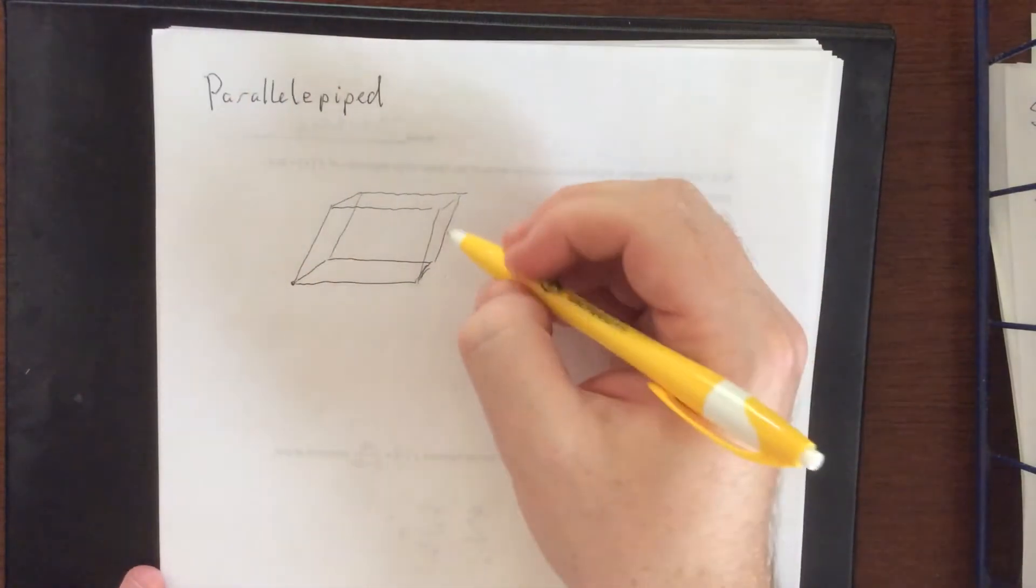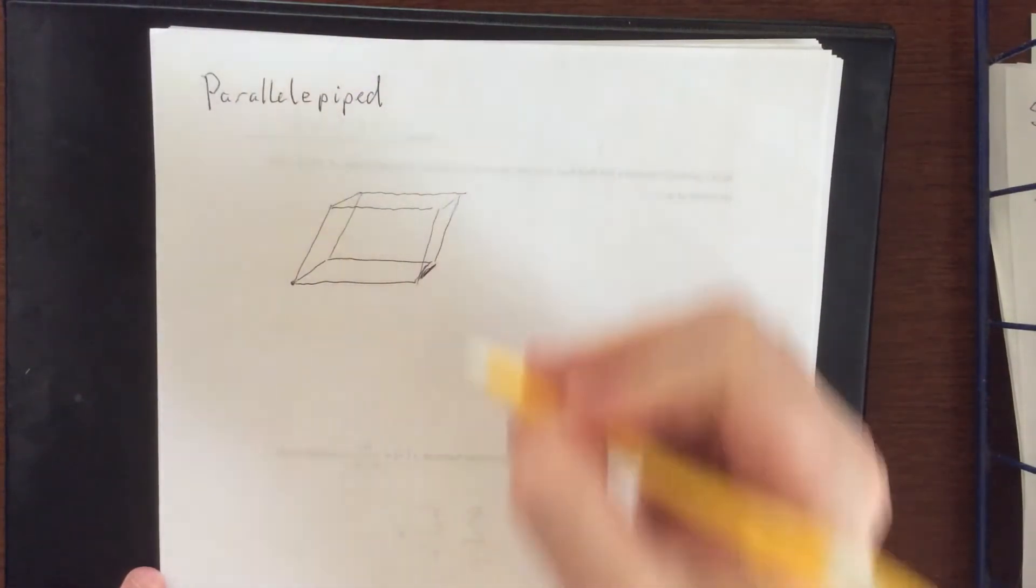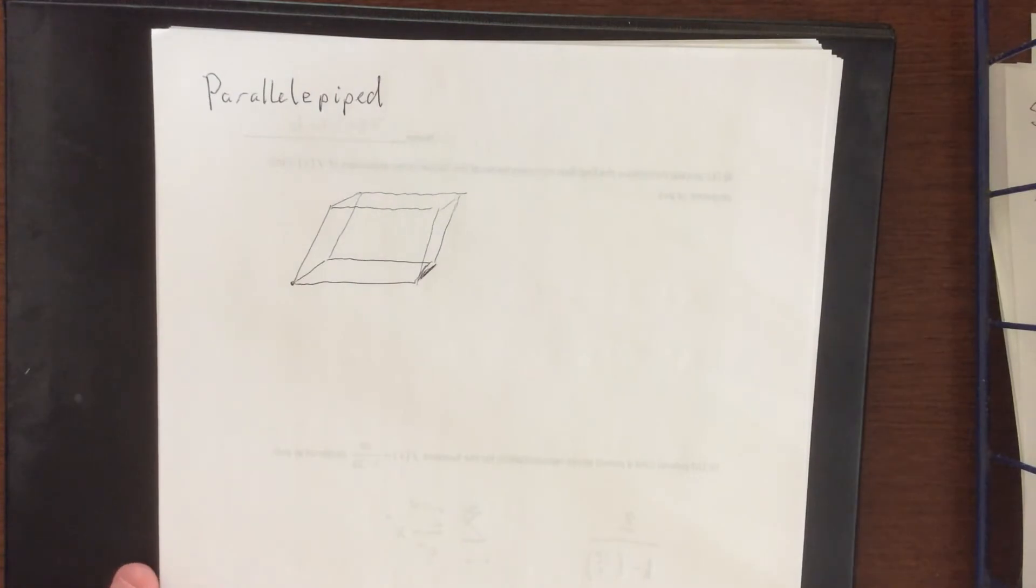Cool. I think aside from this wonky side here that worked out okay. So a parallelopiped is essentially a 3D figure that is comprised of parallelograms, whereas a box would be constructed using rectangles.